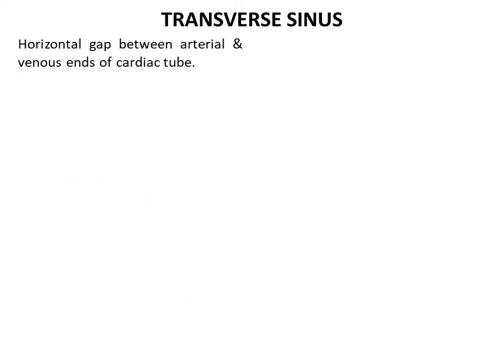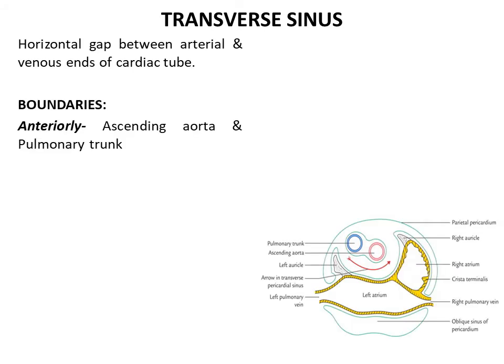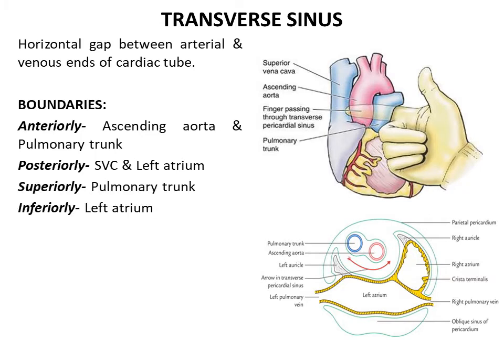The transverse sinus of pericardium is a horizontal gap present between the arterial and venous ends of the cardiac tube. It is bounded anteriorly by the two large arteries — the ascending aorta and pulmonary trunk — enclosed in a single tube of serous pericardium. Posteriorly it is related to the superior vena cava and the upper margin of the left atrium. Superiorly lies the bifurcation of the pulmonary trunk, and inferiorly lies the left atrium.